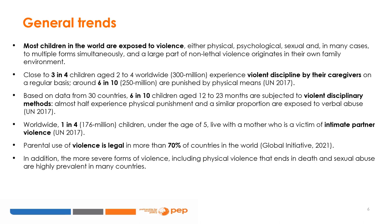UNICEF tells us that based on data from 30 countries, six in ten children aged 12 to 23 months are subjected to violent disciplinary methods, and almost half experience physical punishment while a similar proportion are exposed to verbal abuse. In addition, worldwide, about a quarter of all children under age five live with a mother who herself is a victim of intimate partner violence, exposing them to an already violent domestic environment. Violence in the family occurs in a context where parental use of violence is legal in more than 70 percent of countries worldwide.